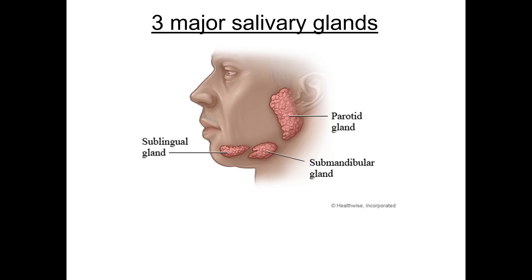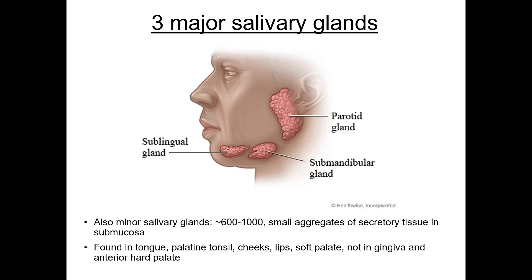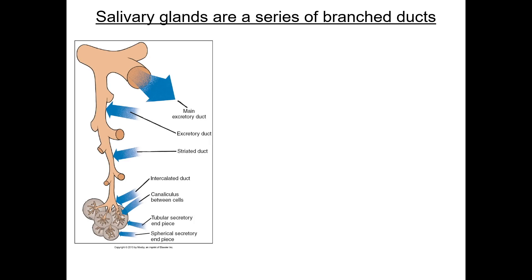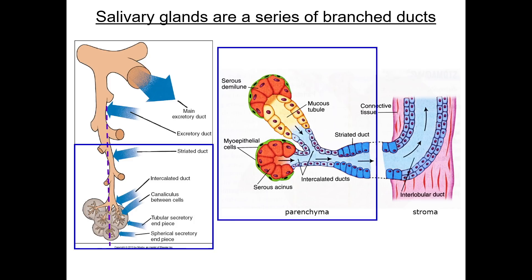There are three major salivary glands: the parotid near the ear, the sublingual under the tongue, and the submandibular, as well as hundreds of minor salivary glands throughout the oral cavity. Each major salivary gland has the same basic structure consisting of a series of branched ducts. The basic histological features are the secretory unit or acinus and the ducts that move and modify the saliva. Taking a section through this structure, the parenchyma consists of secretory units or acini — both mucus and serous — and a series of intralobular ducts: the intercalated ducts which connect the acini to the larger striated ducts.